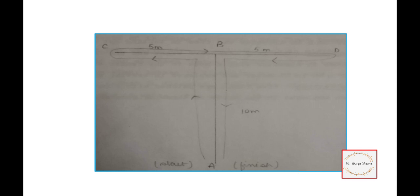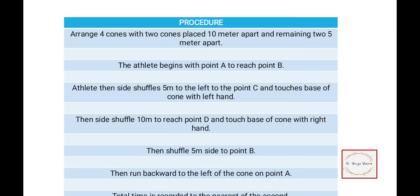The athlete begins at point A. We have points A, B, C, and D. The athlete starts at A, then goes to B. Then he does side shuffle—he will not run straight—to point C. Then he touches the cone with his right hand, comes back to the B position, then side shuffles to point D, touches the cone with his left hand, comes back to B, and then comes back to A. You note the total time.